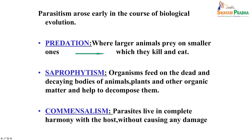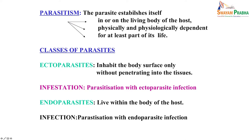Parasitism means the parasite establishes itself in or on the living body of the host, being physically or physiologically dependent on it, at least for part of its life. There are different types of parasites. Ectoparasites inhabit the body surface only and do not penetrate into the tissues — infection by these is known as infestation. Endoparasites live within the body of the host — infection by endoparasites is known as parasitic infection.